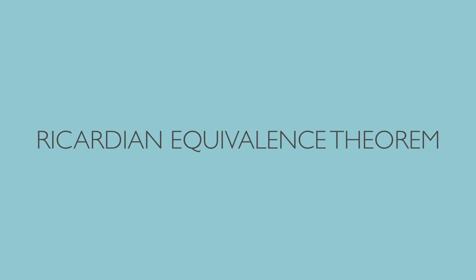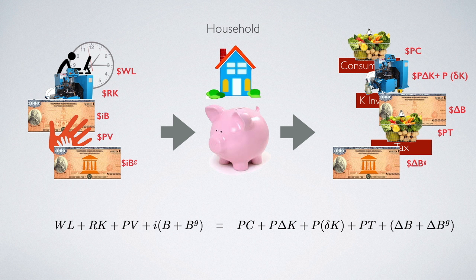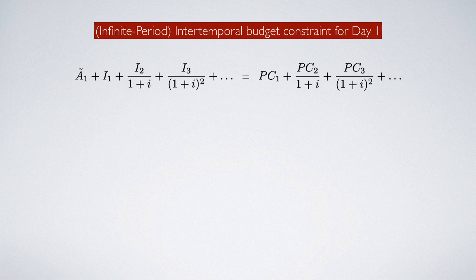Now we are going to learn the famous Ricardian equivalence theory, and we first recap the household budget constraint. We know that when there is a government, the household budget constraint has income flow from the left side — five different income sources — and there will be five different household expenditures on the right hand side, which gives us the household budget constraint. With this definition, we can figure out the infinite period multi-period intertemporal budget constraint that the household faces on day 1. For the infinite period budget constraint, the left-hand side would always be the present discounted value of household lifetime income and initial wealth, and the right-hand side would be the present discounted value of household consumption expenditure.